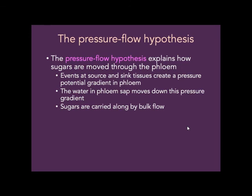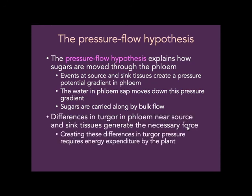Our hypothesis for how phloem contents are moved is called the pressure flow hypothesis. Different events at source and sink tissues create a pressure potential gradient in the phloem. The water in the phloem sap moves down this pressure gradient and the sugars are carried along by bulk flow. Differences in turgor pressure in the phloem near the source and the sink generate the necessary force. The plant does have to expend energy to create the differences in turgor pressure to set this whole process off.